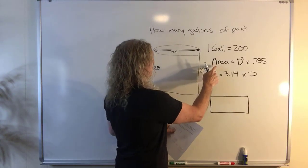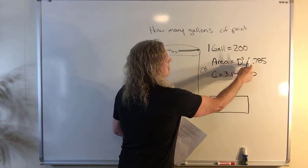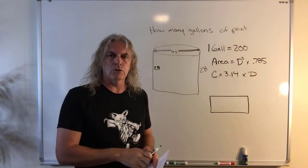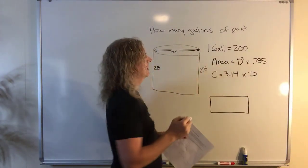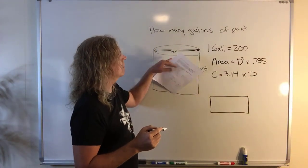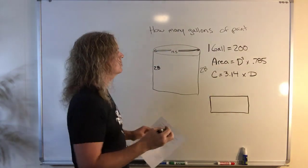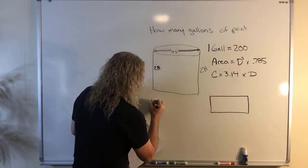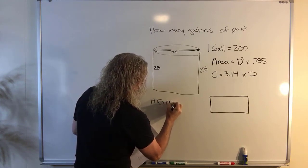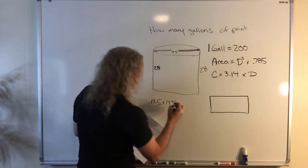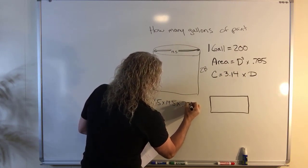First thing we're going to use, area equals diameter squared times 0.785. Now that's the area of a circle. We're talking square feet of that. We do know the diameter is 14 and a half feet. So the area, the top of the tank is pretty easy to figure out. It's diameter squared. So it's 14.5 times 14.5 times that constant 0.785.